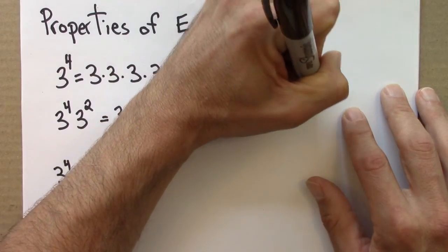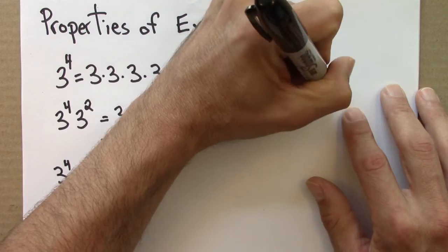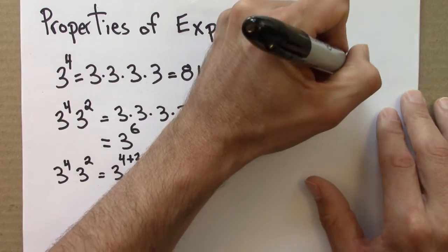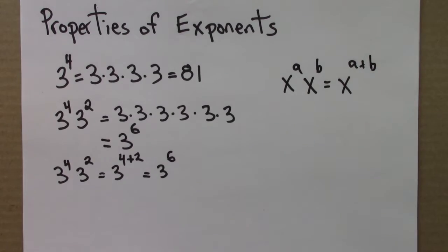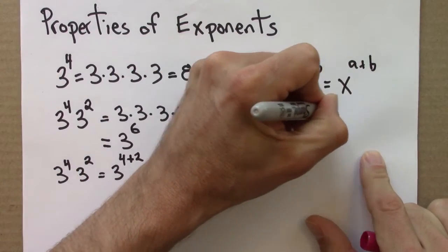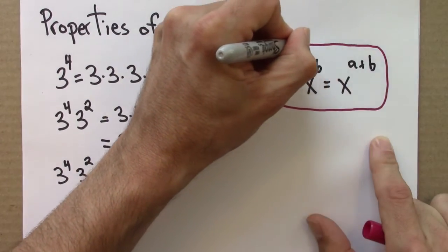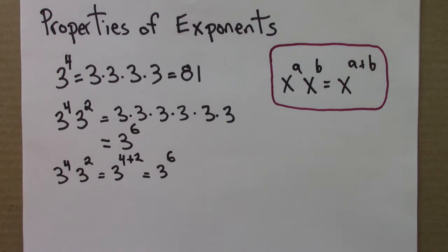So that's our first property or rule for exponents. It says that x to the a times x to the b is x to the a plus b. That's important.